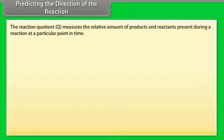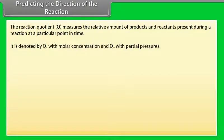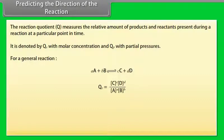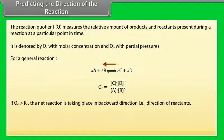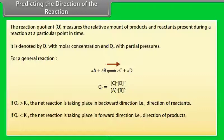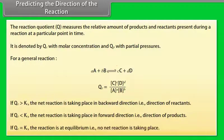Predicting the direction of the reaction: The reaction quotient Q measures the relative amounts of products and reactants present at a particular point in time, denoted QC with molar concentrations and QP with partial pressures. If QC > KC, the net reaction proceeds in the backward direction. If QC < KC, the net reaction proceeds in the forward direction. If QC = KC, the reaction is at equilibrium and no net reaction is taking place.